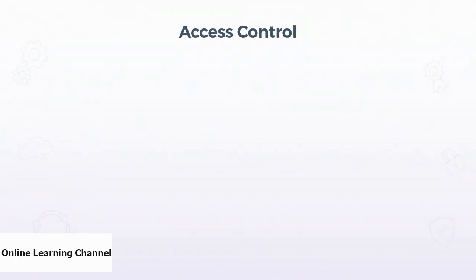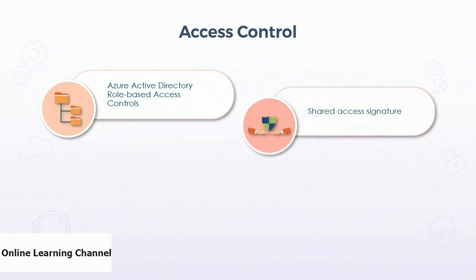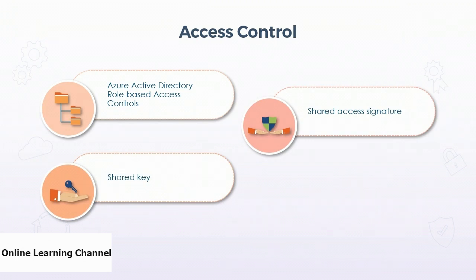Access to data stored in Blob Storage accounts requires authorization, which can be provided through multiple supported methods. Role-based access controls can be enforced using Azure Active Directory as an authentication mechanism. Shared access signatures, or SAS, provide a token that provides delegated access to the contents of the storage account. A shared access signature is user-created and specifies the permissions granted, as well as a period of validity before the SAS expires. The token can be signed with either a shared key or using the admin's Active Directory credentials.